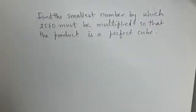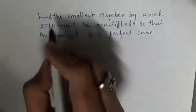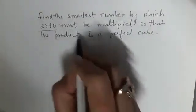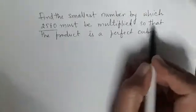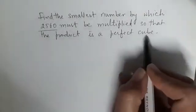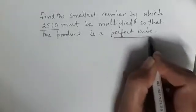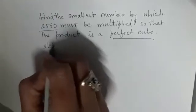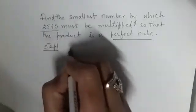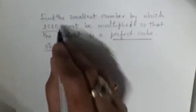Let us take another question: find the smallest number by which 2560 must be multiplied so that the product is a perfect cube. The process requires us to first do the prime factorization of 2560.